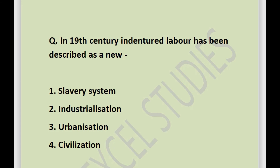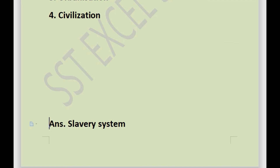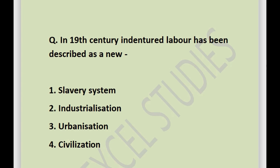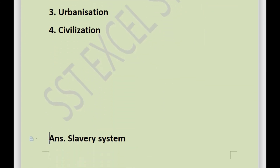Next question: in 1930, indentured labor has been described as a new — options are slavery system, industrialization, urbanization, or civilization. The answer is slavery system. This indentured labor system was known as the slavery system.